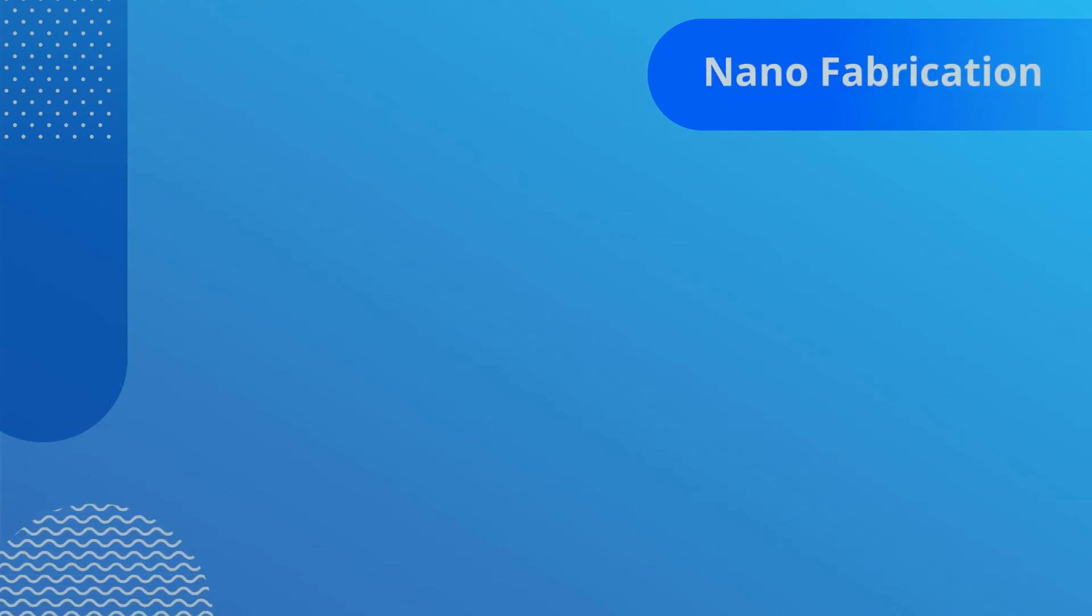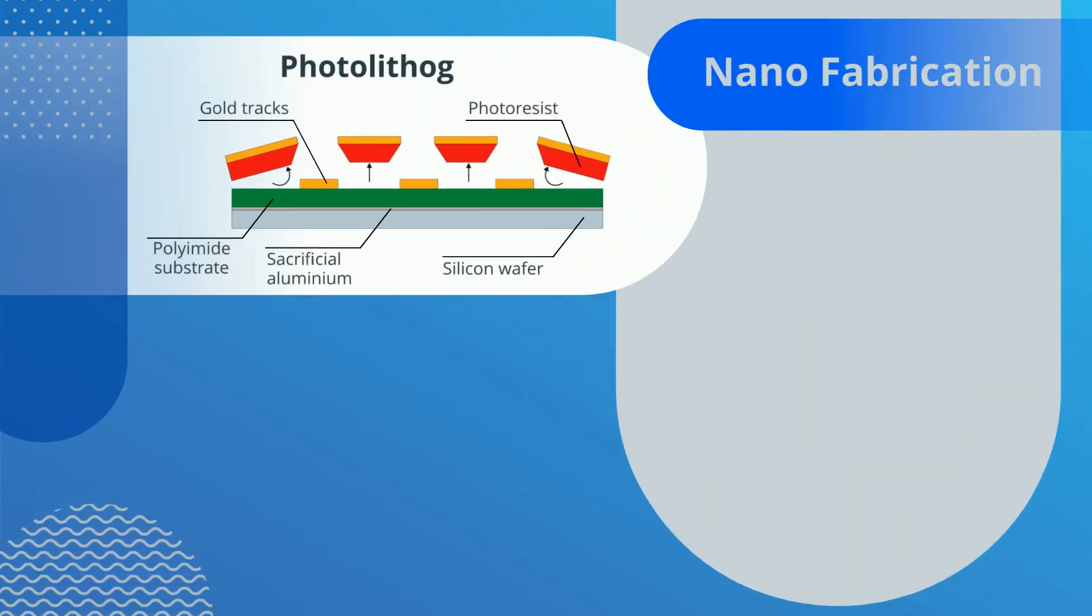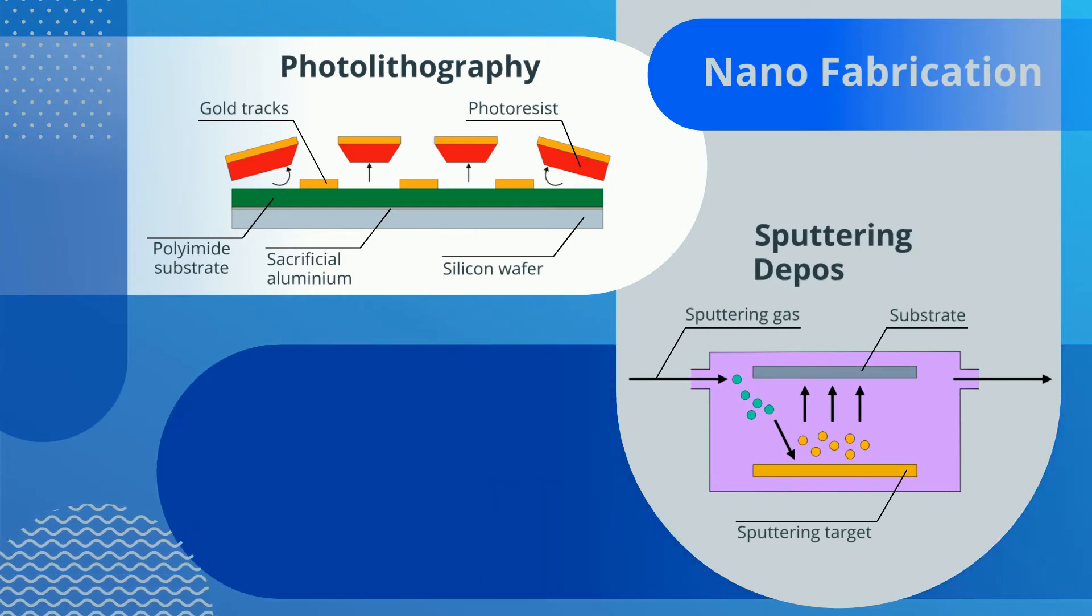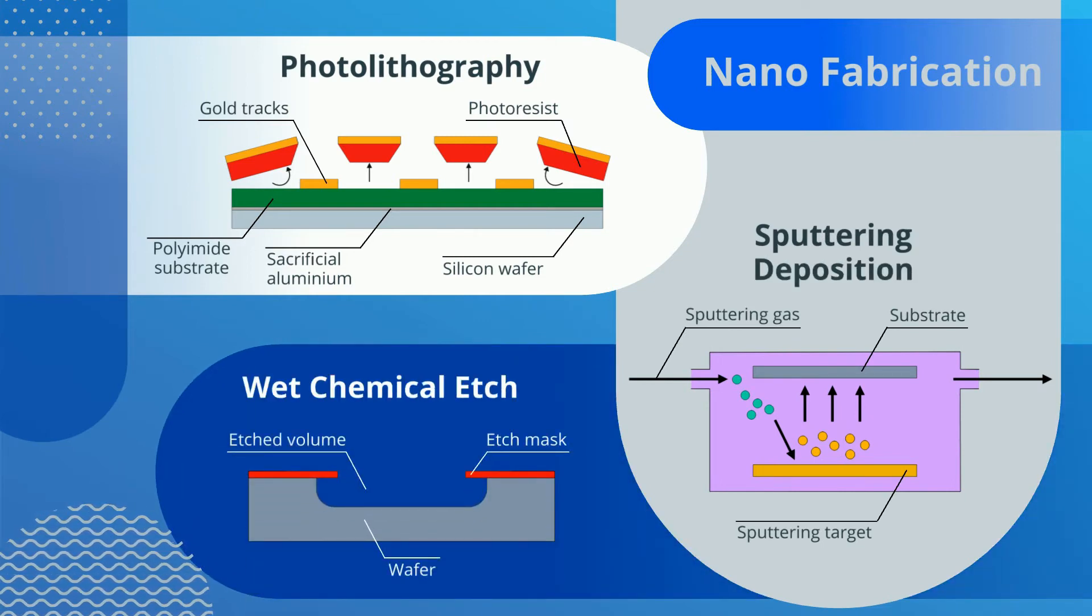Miniaturized polymer probes require experience of nanofabrication techniques. Photolithography creates the pattern, sputtering deposits the metal, and etching is used to create probe shapes.